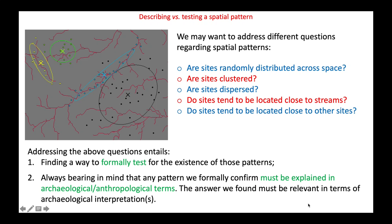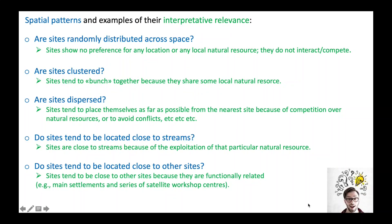Once we locate and test for the existence of a spatial pattern, we have to make sense of the identified pattern in meaningful archaeological or anthropological terms. For instance, if sites are randomly distributed, this may indicate that they show no particular preference for any natural resource, or that they do not interact or compete with one another. If sites are clustered, they may have formed groups because they were sharing some natural resources or because they were exploiting a specific part of the landscape. Other spatial patterns and their possible substantive interpretations are listed in the present slide.